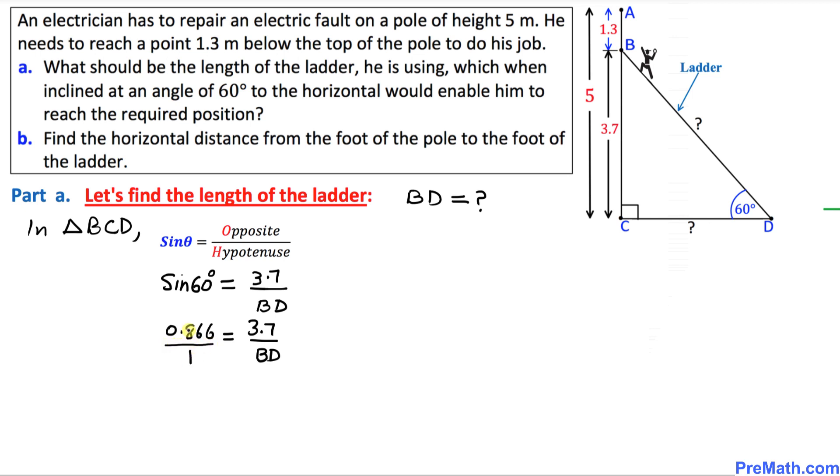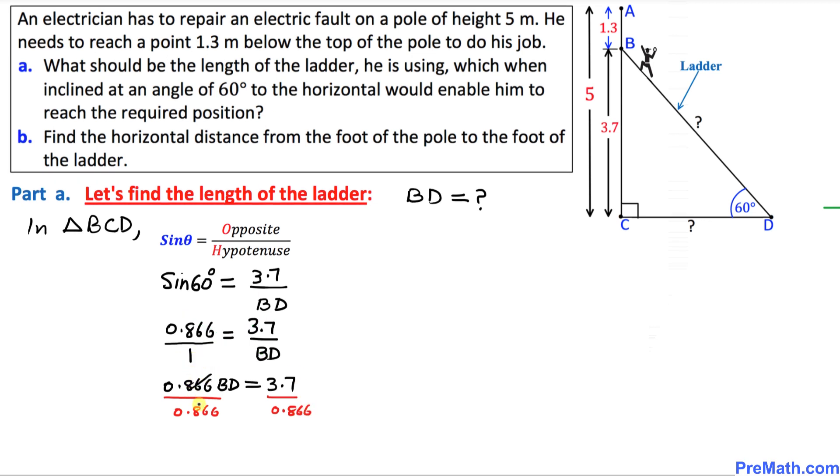And I am going to cross multiply. That is going to give us 0.866 times BD equal to 1 times 3.7, which is 3.7. Since we want to solve for BD, I'm going to divide both sides by 0.866. These decimals and numbers cancel out. We ended up with BD equal to, if we divide these numbers, we're going to get 4.27.